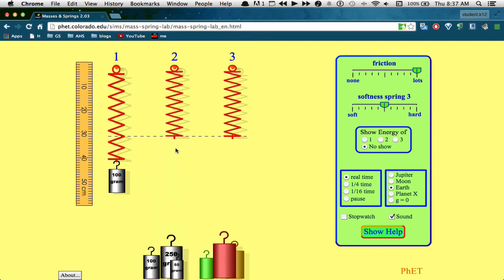You can hang the masses just by putting them on the springs. Whoops, I missed that one. There we go. And then to take them off, just drag it sideways.